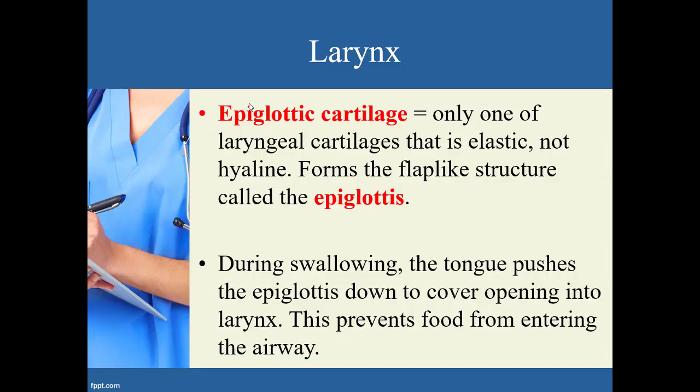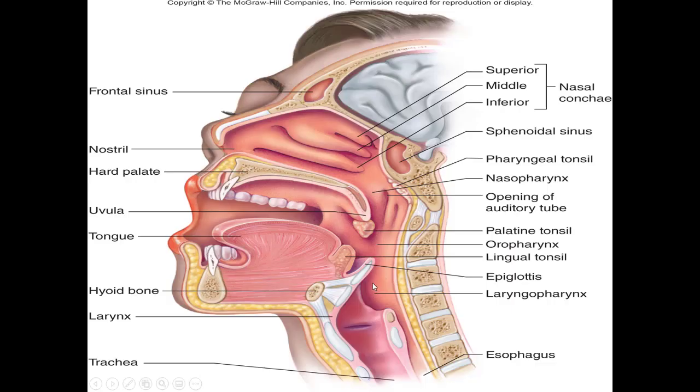The other cartilage is the epiglottic cartilage — the only one connected to the larynx that has elastic tissue rather than hyaline cartilage. It forms the epiglottis, which covers the entryway to the trachea whenever you swallow so food or liquid doesn't go into your lungs. When someone chokes, that's the food going the wrong way — down the trachea instead of the esophagus. Whenever you swallow, your tongue forces the epiglottis to close and make a seal.